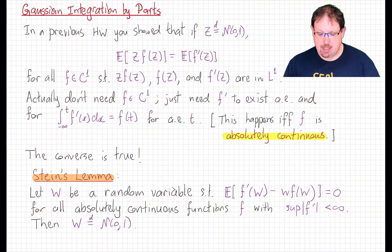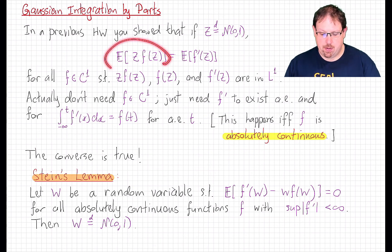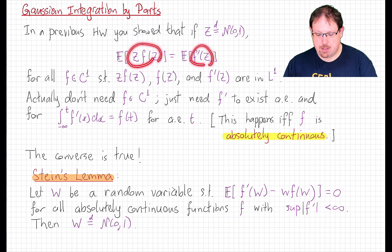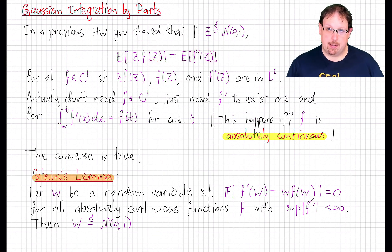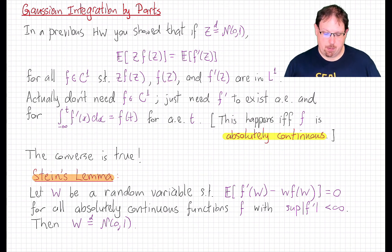On a homework exercise earlier in this course, you were asked to prove Gaussian integration by parts. If z is a standard normal random variable, then for all sufficiently nice functions f, the expected value of z times f(z) is equal to the expected value of f'(z). In that assignment, sufficiently nice was interpreted to mean a C1 function f for which the random variables on both sides are in L1, so the expected value makes sense. Moreover, I allowed you to assume that f(z) is also in L1, which aided in the integration by parts proof.